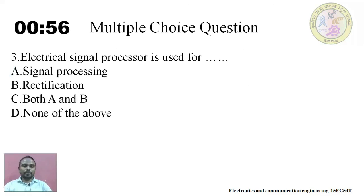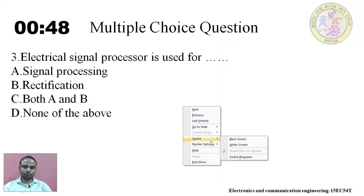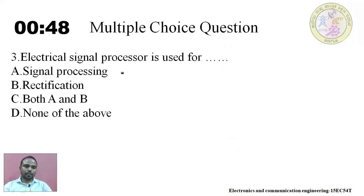Question three: the electrical signal processor is used for dash. Options: signal processing, rectification, both A and B, or none of the above. The answer is signal processing — the electrical signal processor is used for signal processing.